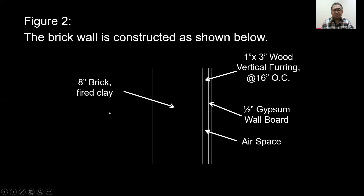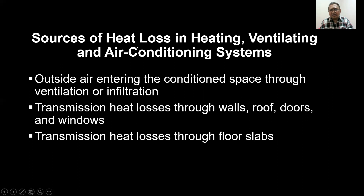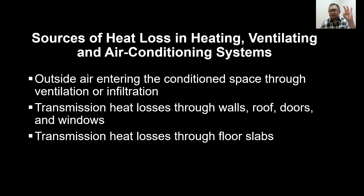The brick wall is shown below. You have 8 inch brick made of fire clay, 1 by 3 inch wood vertical furring at 16 inch on centers, 1.5 inch gypsum wall board, and an air space. The sources of heat loss in heating, ventilating, and air conditioning systems are: outside air entering the conditioned space through ventilation and infiltration; transmission heat losses through walls, roof, doors, and windows; and transmission heat losses through floor slabs.